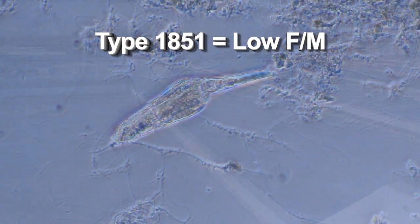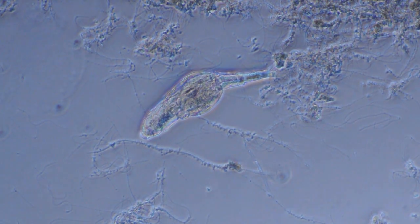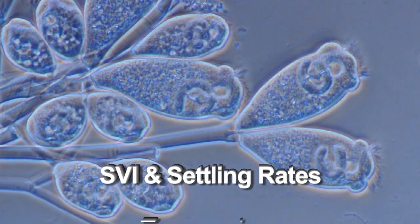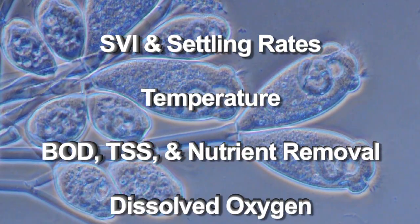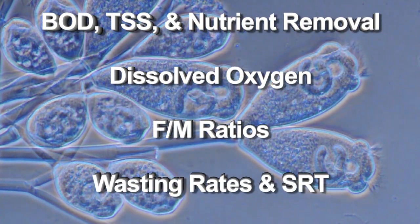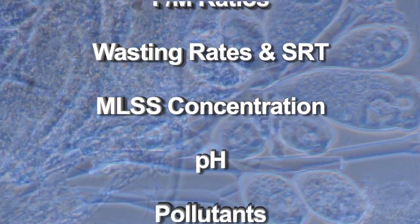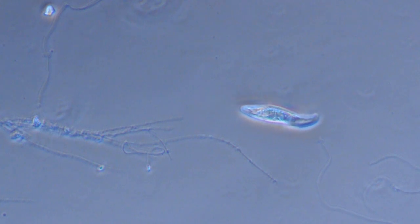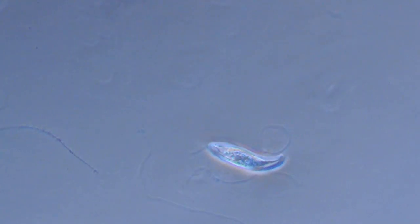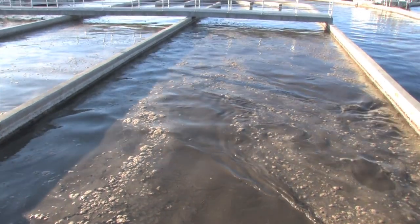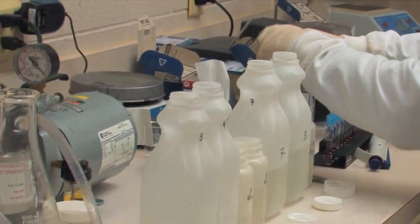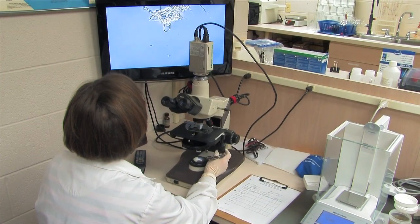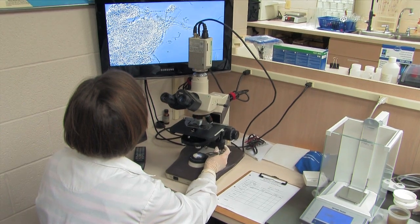Physical parameters that could correlate with your microorganism populations include SVI and settling rates, temperature, BOD, TSS and nutrient removal rates, dissolved oxygen levels, F-to-M ratios, wasting rates and SRT, mixed liquor concentration, pH, and the presence of pollutants. Once you identify and track indicator organisms, you can change controllable conditions such as mixed liquor concentration, aeration, recycle flow, pH adjustments, and nutrient deficiencies. It may take some effort, but it can help you operate better — and the better you operate, the cleaner the water is, and that makes it all worth it.